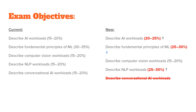We can see on screen that Microsoft has actually moved the weightings of the various exam objectives around. The first objective, describe AI workloads, has actually been increased by 5%, from 15–20 up to 20–25. The second objective, fundamental principles of machine learning on Azure, has actually been reduced. It was 30–35, which is quite high, and is now down to 25–30.